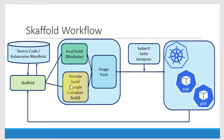Once the build is done, we get the artifact — that is, the image — and that image will be pushed into the registry or repository. From the repository, we can trigger the deployment.